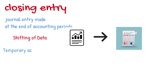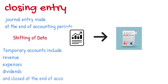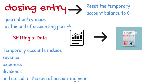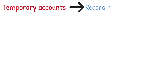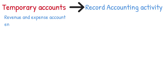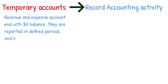Temporary accounts include revenue, expenses, and dividends, and must be closed at the end of the accounting year. The purpose of the closing entry is to reset the temporary account balances to zero on the general ledger, the record-keeping system for a company's financial data. Temporary accounts are used to record accounting activity during a specific period. All revenue and expense accounts must end with a $0 balance because they are reported in defined periods and are not carried over into the future.